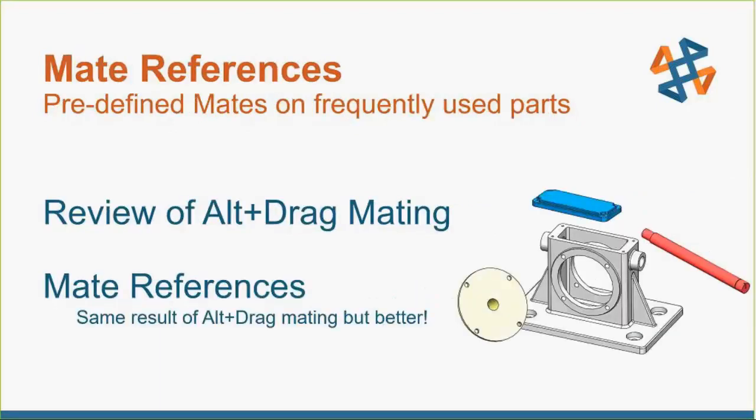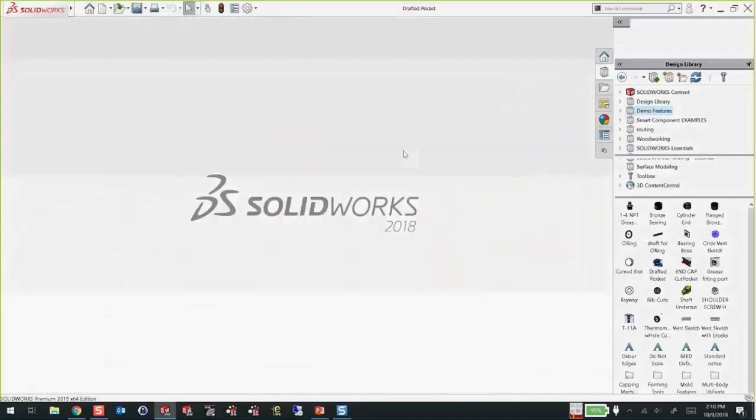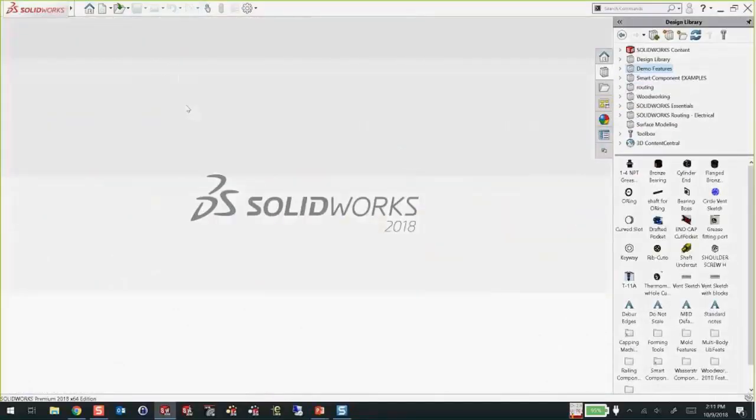Moving on — we're going to talk about something that will make you faster at mating, called mate references. These are predefined mates on a frequently used part. You wouldn't go to the trouble to do this on a part you're only going to use once, but for parts you use over and over — hardware, handles, knobs, nuts and bolts — you'd want to add this. Our toolbox library already has mate references on those, so you can snap those bolts into place. I'm also going to do a quick review of alt-drag mating, which is really kind of the same thing that mate references are doing in the background.